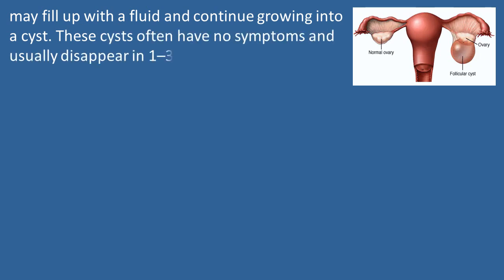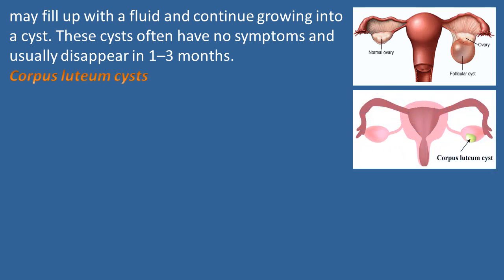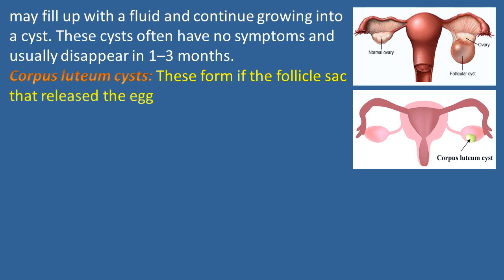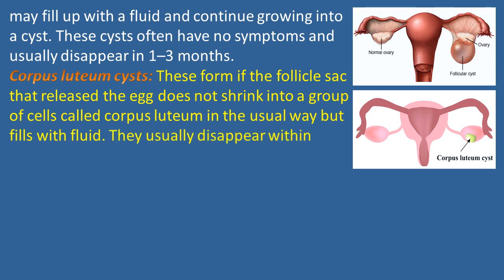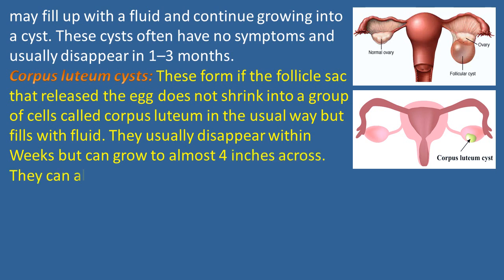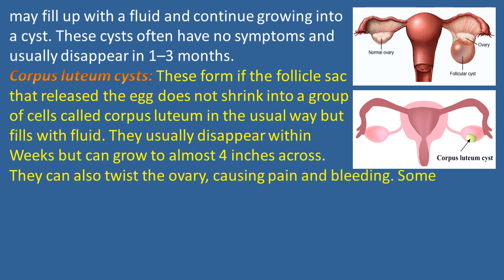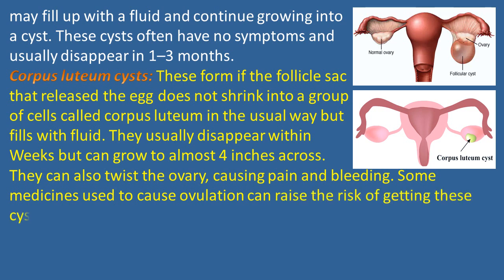Follicle cysts usually disappear in 1 to 3 months. Corpus luteum cysts form if the follicle sac that released the egg does not shrink into a group of cells called the corpus luteum in the usual way, but instead fills with fluid. They usually disappear within weeks but can grow to almost 4 inches across. They can also twist the ovary, causing pain and bleeding. Some medicines used to cause ovulation can raise the risk of getting these cysts.